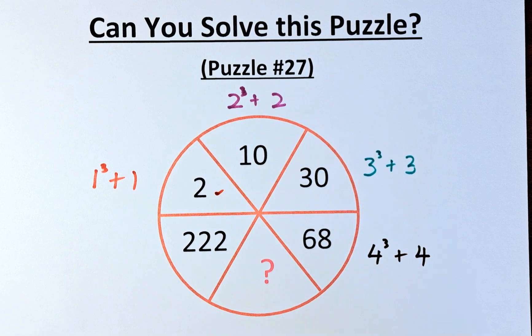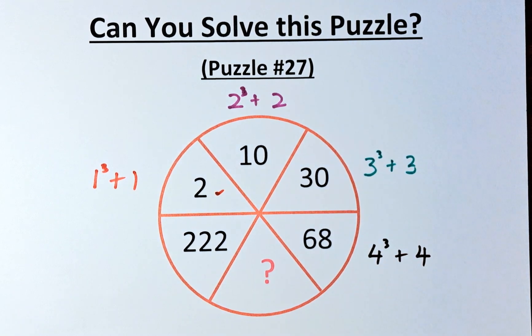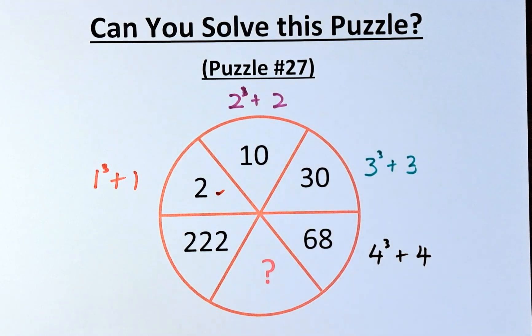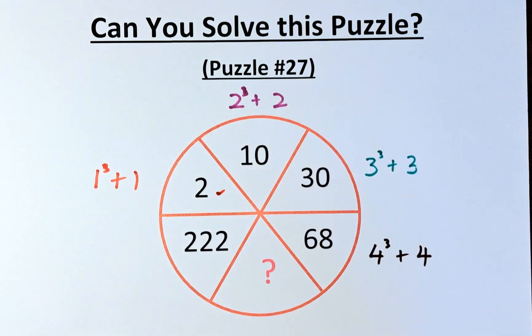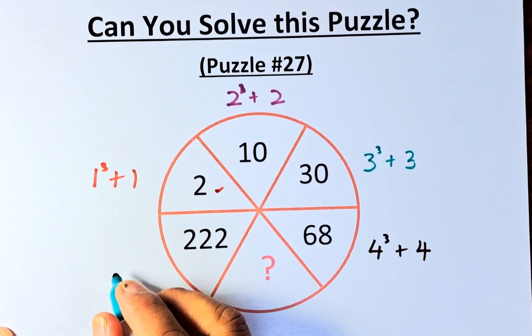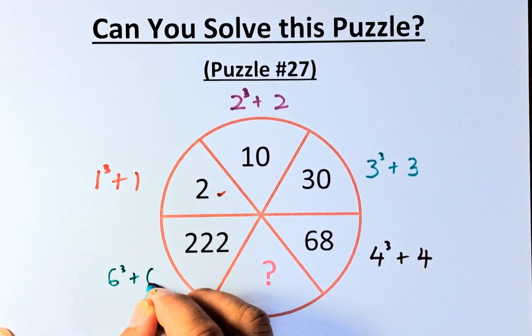We'll leave the question mark for a while and we will proceed to the 222. So this is 1, 2, 3, 4. The next number should be 6 cube plus 6.